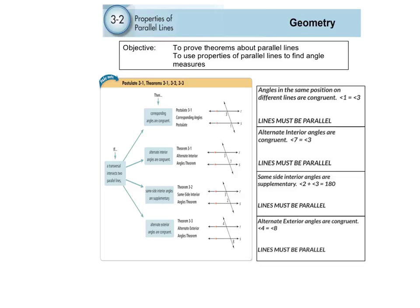If the lines are parallel — that's the whole key right here. If a transversal intersects two parallel lines, that's a major important part. Those lines have to be parallel. If that happens, then these four things are true. Number one, first and foremost, corresponding angles are congruent.